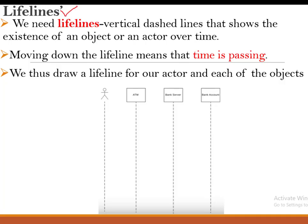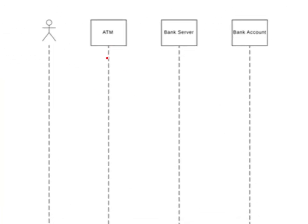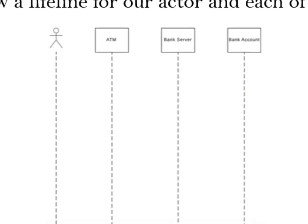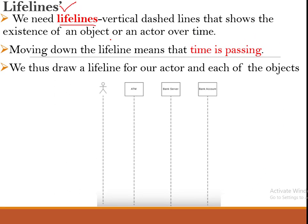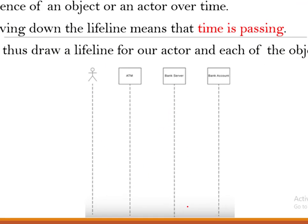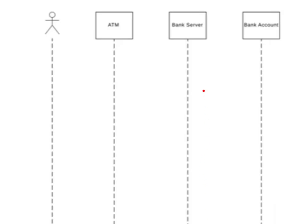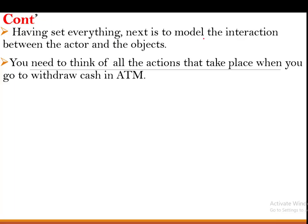The next component is what we refer to as a lifeline. A lifeline is a vertical dashed arrow that moves from top downwards, showing how long a particular object or actor exists within a given time period. Moving from top to bottom shows that time is moving. We use dashed arrows to represent the duration or passage of time as the different objects or actors are interacting.